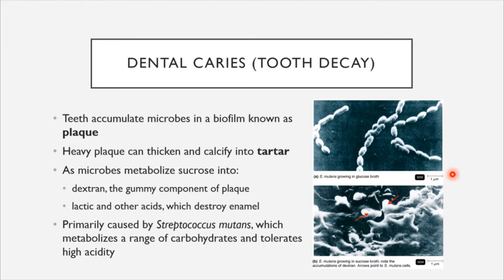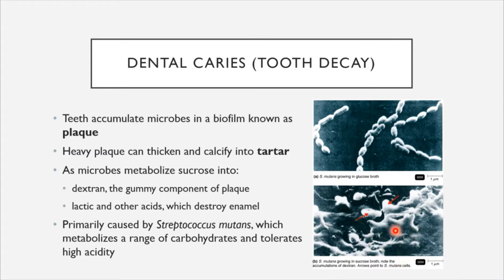The primary species of bacterium involved in this metabolic process is Streptococcus mutans, which metabolizes a wide range of carbohydrates and also tolerates the high acidity levels generated when sucrose is metabolized into organic acids. We can see that Streptococcus mutans has secreted a large amount of dextrin, that gummy substance contributing to the production of a biofilm layer.